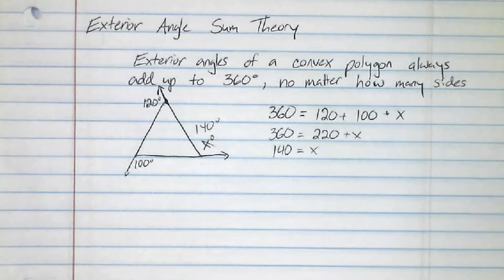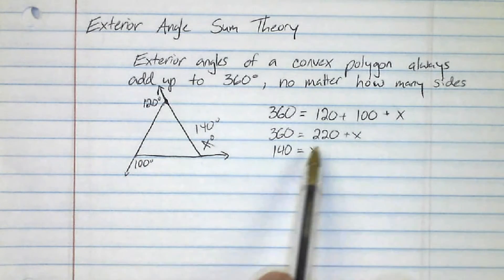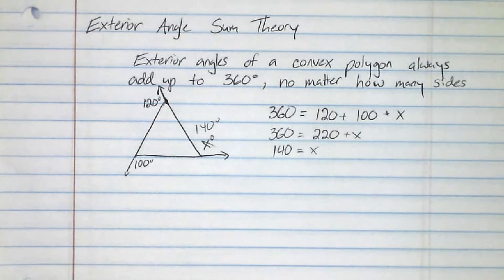And again, they could make this a little more complicated if they wanted to. For example, instead of having 100 here, they could say X minus 40 and just have 120 listed there and so forth. But this is basically how you solve them.